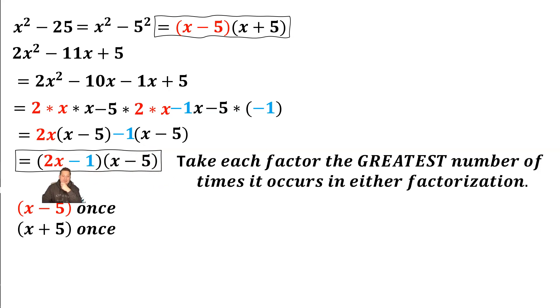Lastly, the 2x minus 1 that you see there, the greatest number of times it occurs is only once also, in the bottom factorization. So that's going to be 2x minus 1 taken one time.